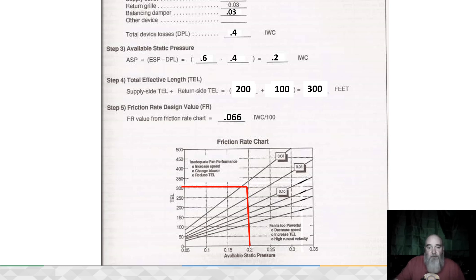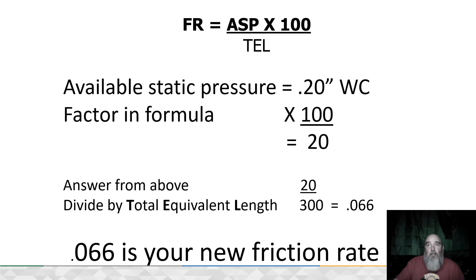It intersects with the 0.2 available static, and we're somewhere between 0.06 and 0.08. If you wanted to round that to 0.07 for your friction rate, knock yourself out—there's absolutely nothing wrong with doing it.